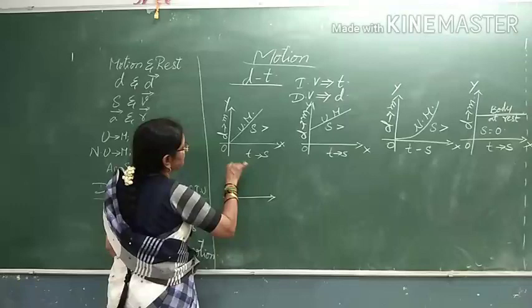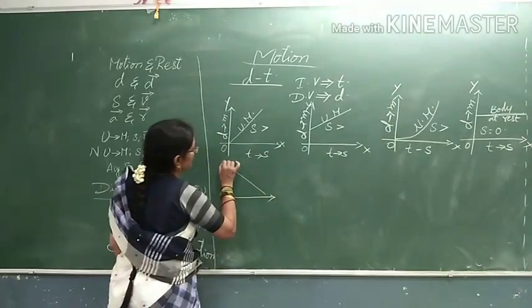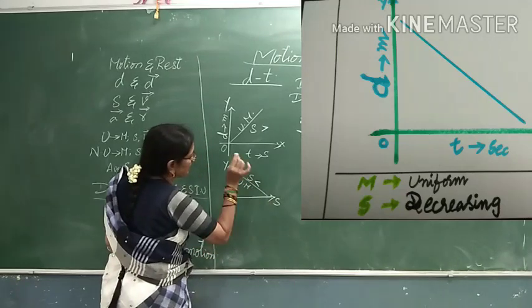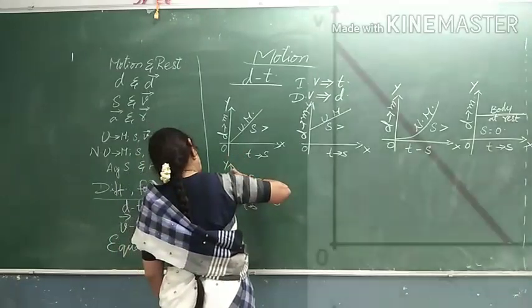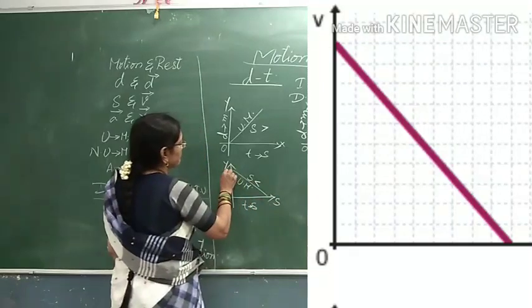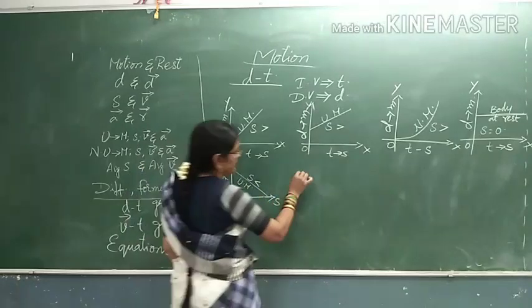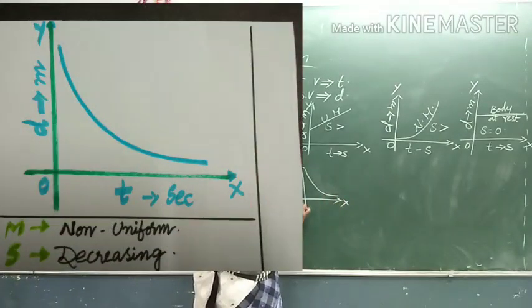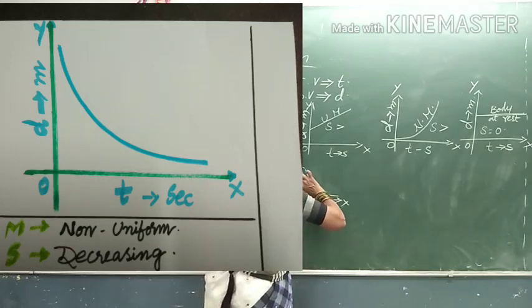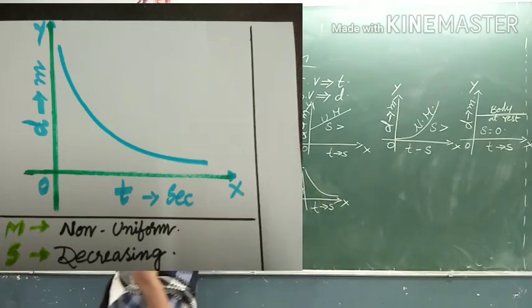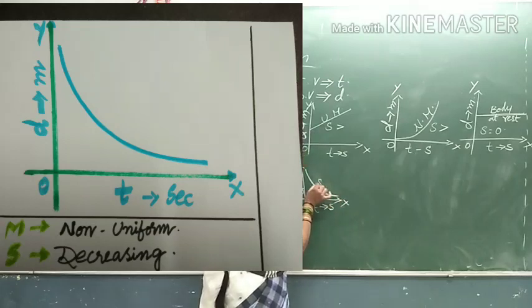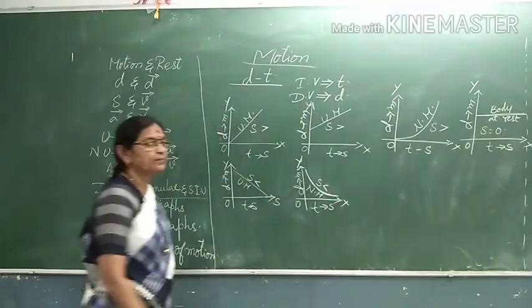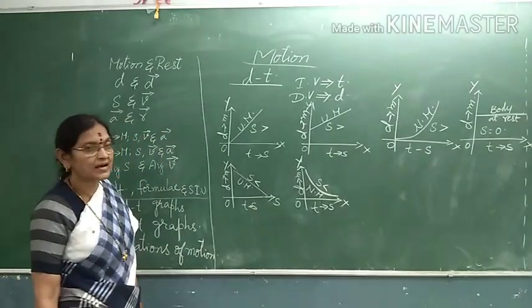Now, coming to the next distance time-graph. Suppose in this distance time-graph, if the slope is coming from top to down, the speed is decreasing. But it is a straight line, so it is uniform motion only. So in this graph, the speed is decreasing. It is uniform motion since it is a straight line. If in the graph it is coming as a curve, this is non-uniform motion. The slope is coming towards the x-axis from the top, so speed is again decreasing, and since the slope is a curve, it is non-uniform motion.